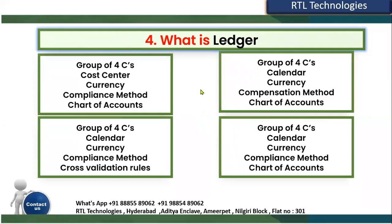The fourth question is relevant for finance but is also mandatory knowledge for HCM and Supply Chain Management consultants: what is a ledger, or what is a primary ledger? In enterprise structure, we associate a legal entity with a ledger. A ledger is a group of forces — the options are: cost center, currency, compliance method and chart of accounts; or calendar, currency, compliance method, or cross-validation rules; or calendar, currency, compensation method; or calendar, currency, compliance method and chart of accounts.